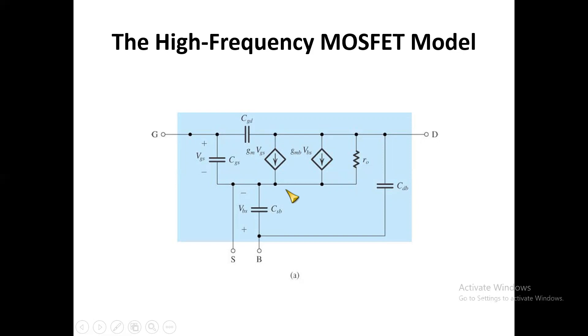We generally find that the source is connected to the substrate. If the source is connected to the substrate, then CSB will no longer be there, and VBS will be equal to zero. Therefore, this current will not be present at all, so this will be open. We are left with only this and the capacitance here will be directly connected to the source.